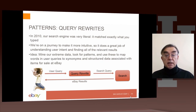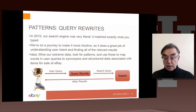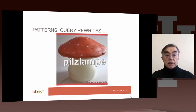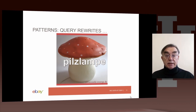The user types something in, eBay rewrites it, and then that rewritten query is the one that actually gets executed. Here's an example with a lamp — there's something called a Pils lamp, coming from a company in Germany, and eBay gives this as a simple example.